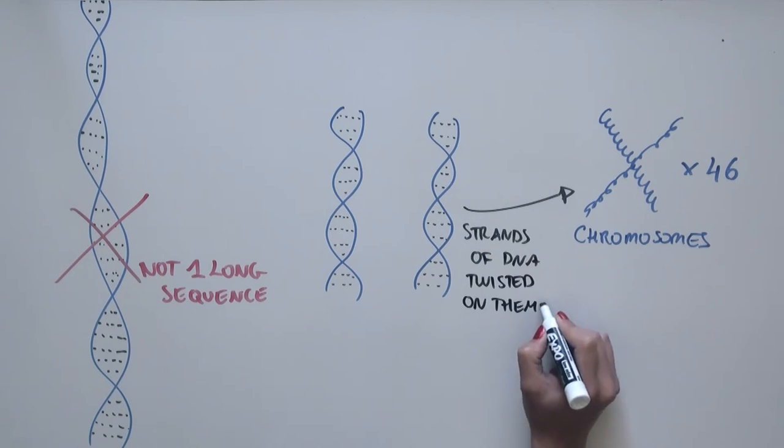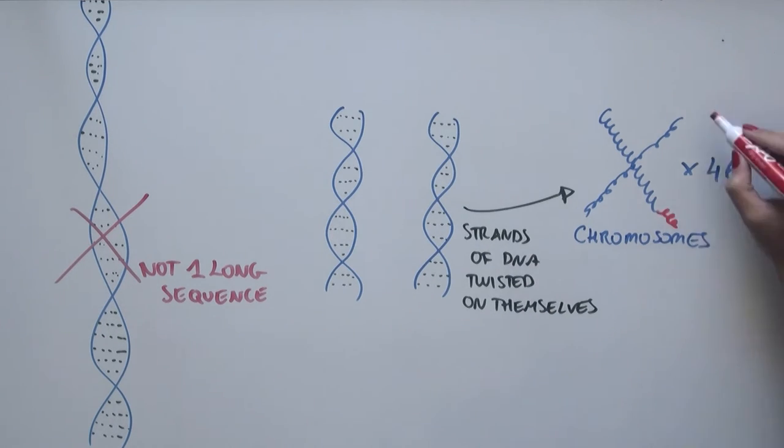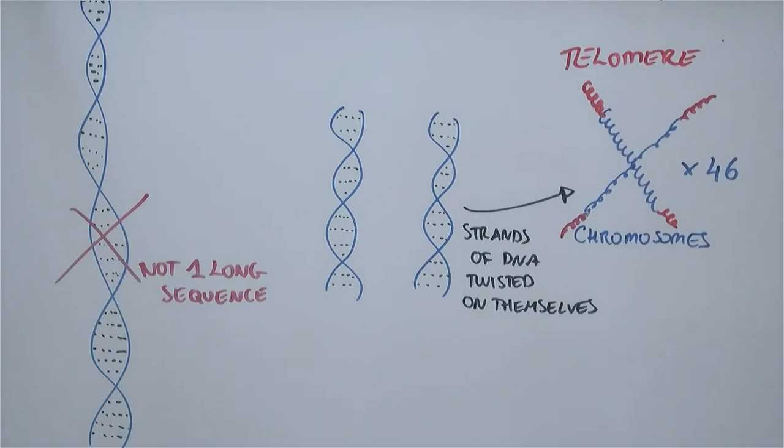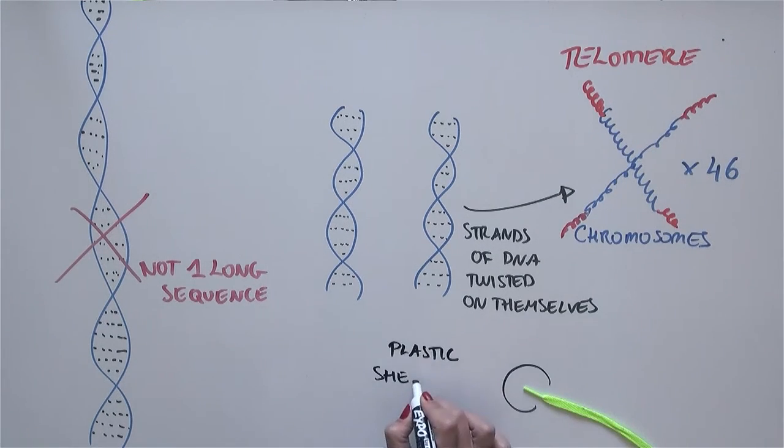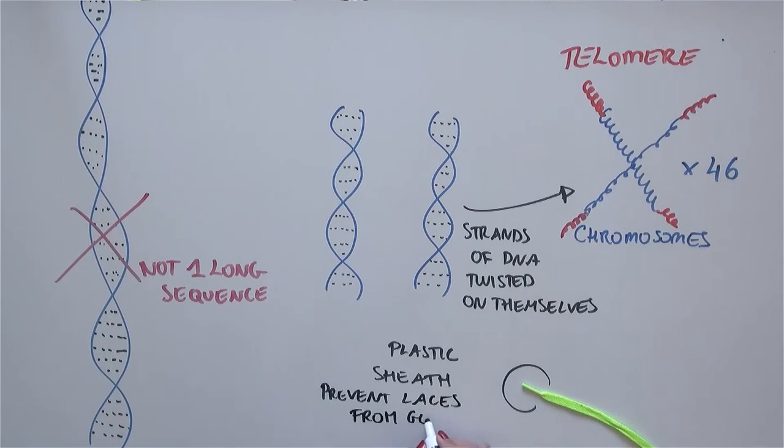At each end of the DNA sequence is a piece of DNA called a telomere, here in red, which is similar to the plastic sheath at the end of shoelaces, that prevent shoelaces from getting too short.